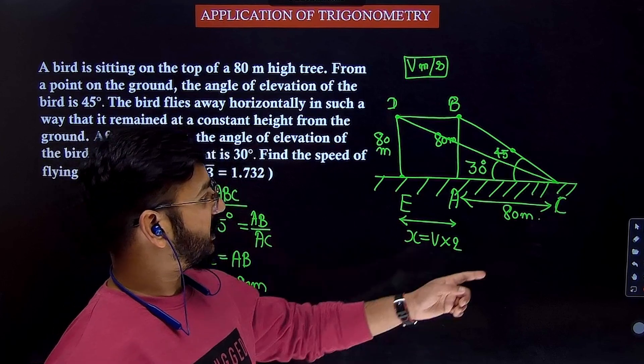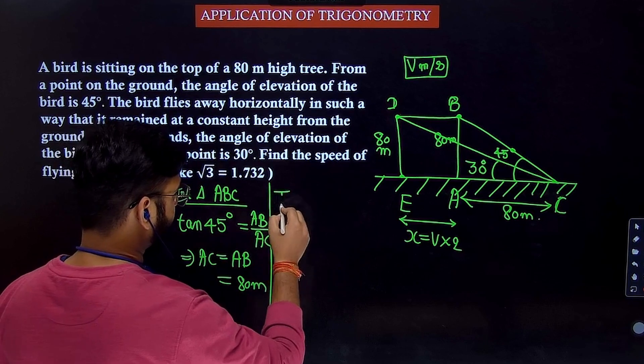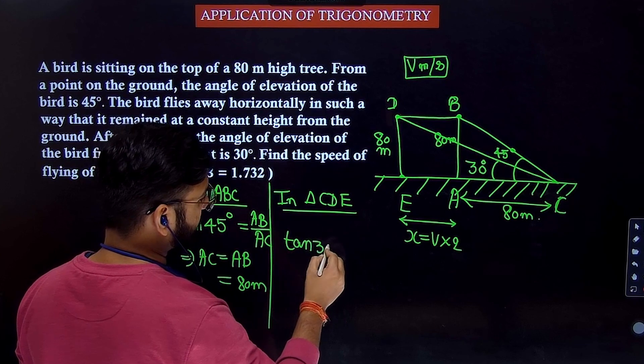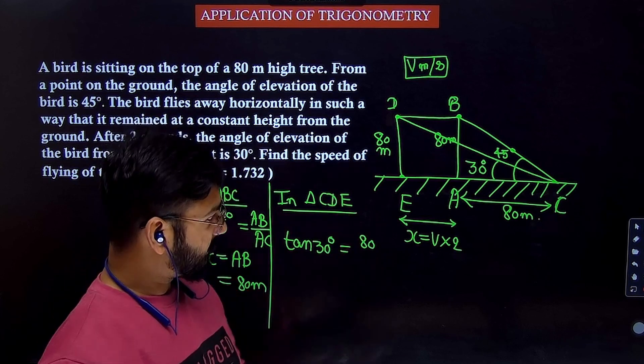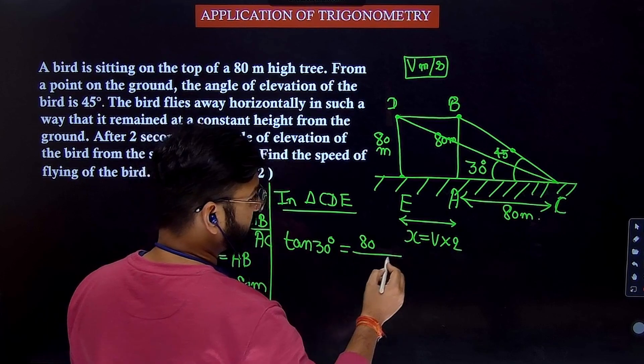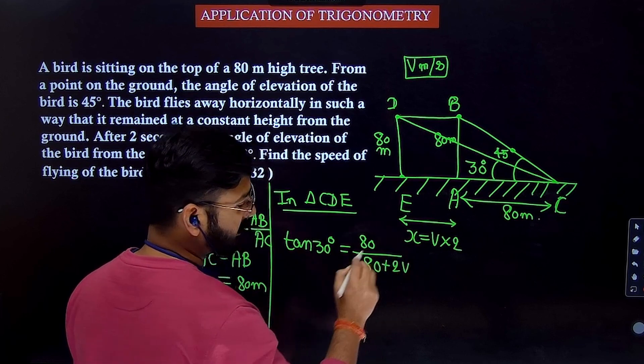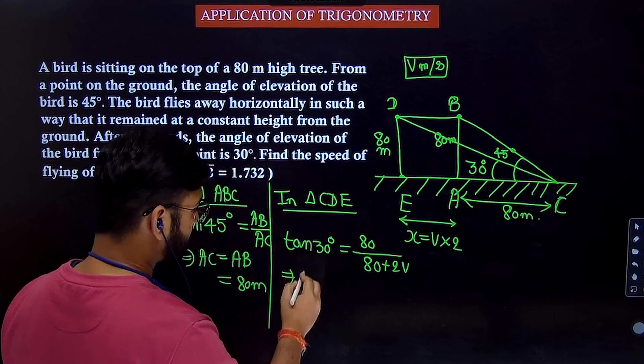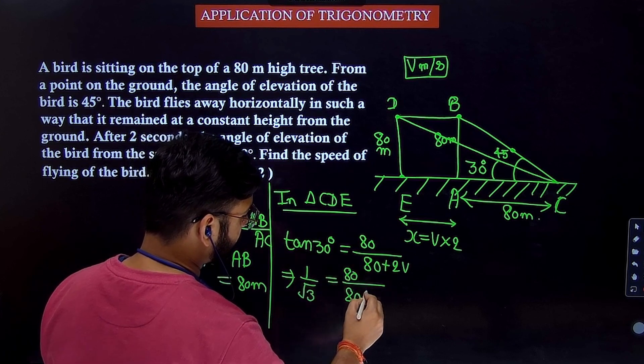Now I will apply tan theta in the triangle CDE which is a bigger triangle. So in triangle CDE, what is the angle there? Tan 30. Tan 30 will be opposite by base. Opposite is 80. What is the base if you see carefully? 80 plus X. And what is X? 2V. So 80 divided by 80 plus 2V. Opposite by base. So tan 30 is how much? 1 by root 3. So we will write 1 by root 3 equal to 80 divided by 80 plus 2V.